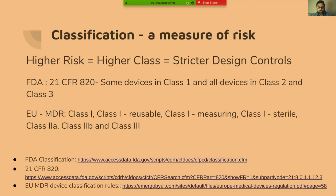With EUMDR, which was supposed to have come into effect last month but is now postponed by a year, it's the same structure: class one, class one reusable measuring sterile, class two A, and so on. We have the links for different classification rules at the bottom of the slide.